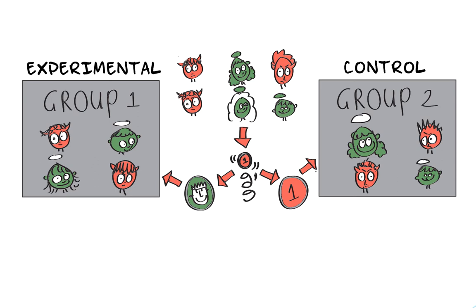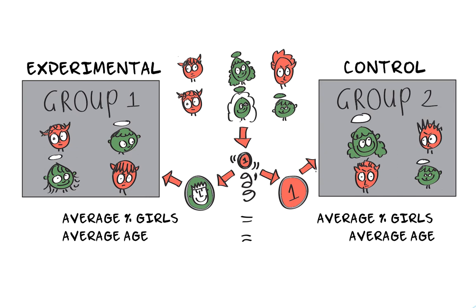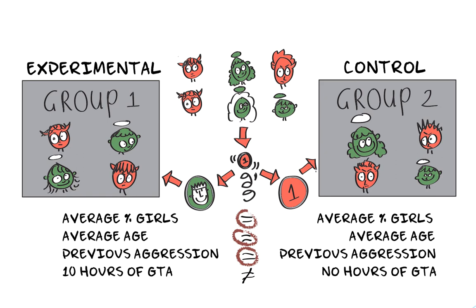On average, this process will ensure an equal distribution over the two groups in terms of gender, but also in terms of age, previous aggression, hair color, shoe size—I can go on. On average, random assignment ensures that there is no systematic difference between the two groups other than the difference in the independent variable.